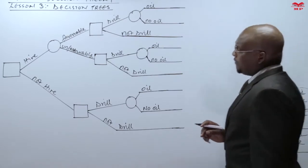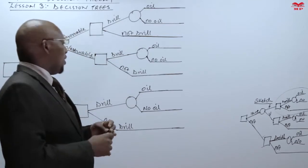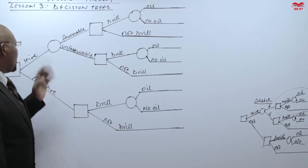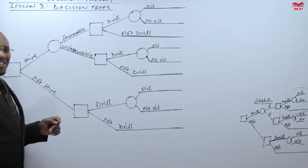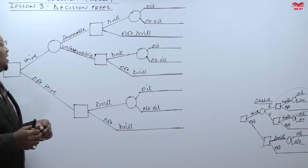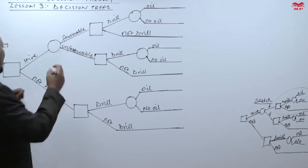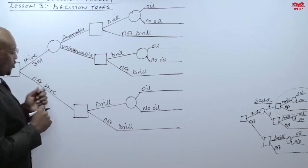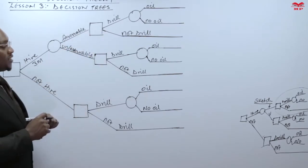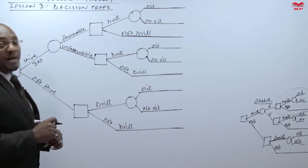This is a payoff. I have labeled my diagram. When you're labeling, note that where we have a decision node, the decision alternative will have its value either as a cost or as an income. For example, the cost of hiring or obtaining information is 3 million, so here we record 3 million. For 'not hire' there is no cost. Where you have a box — drilling and not drilling — these are also decisions which have costs.